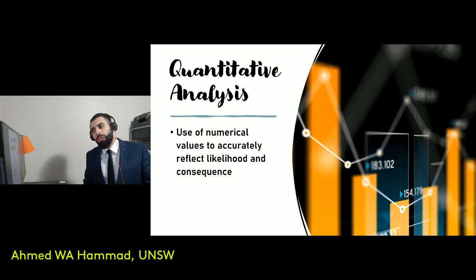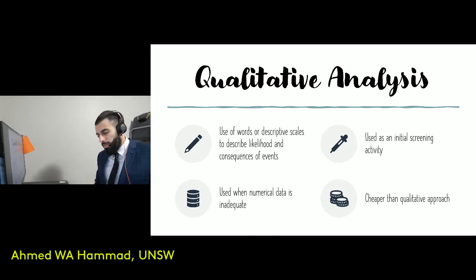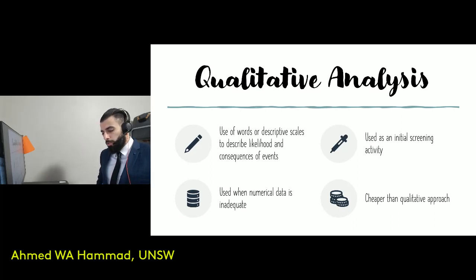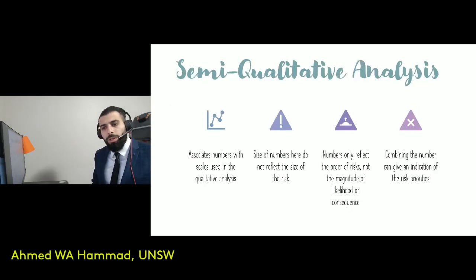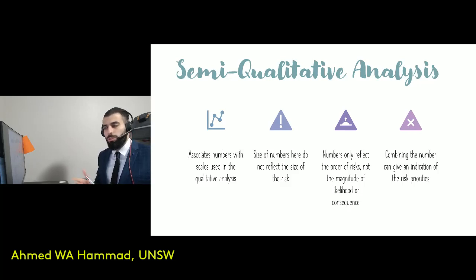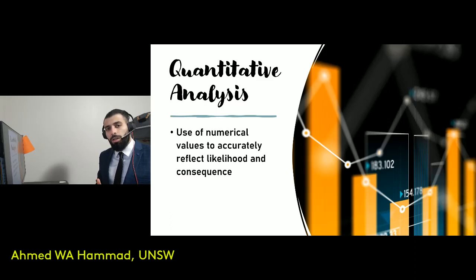In this course, there are several analysis methods to be covered. For qualitative analysis approaches, we'll look at the probability and impact matrix, where you have scales — very low, low, very high — associated with probability and impact using descriptors rather than numbers. An example of a semi-qualitative approach we'll cover is AHP, the Analytic Hierarchy Process, which allows you to rank risks when you have several alternatives. For quantitative analysis, we'll go through decision tree analysis, fault trees, and Monte Carlo simulation.